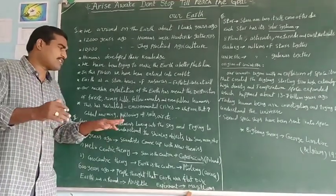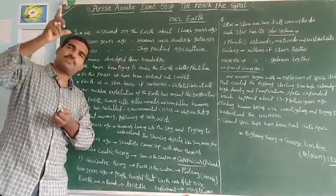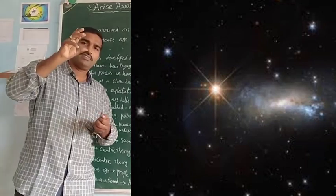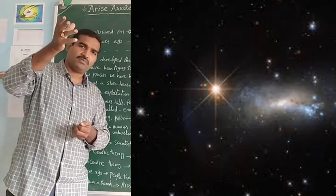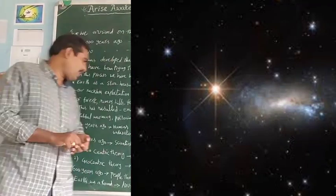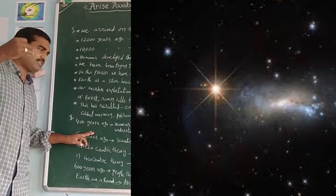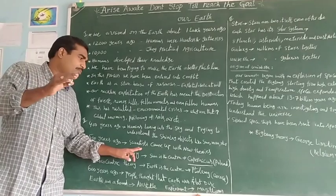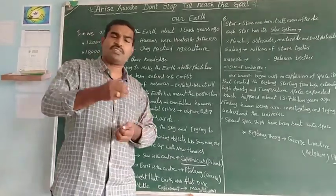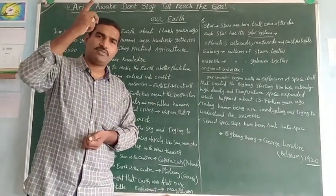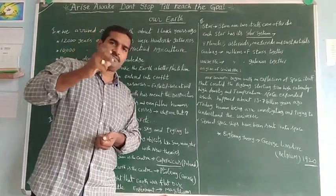400 years ago, humans looked into the sky and tried to observe the shining objects — like what are the shining objects in the atmosphere: the sun, stars, moon, and other planets of space. They wanted to understand these shining objects. Around 500 years ago, scientists came up with new theories about the universe and space. There are mainly two important theories.